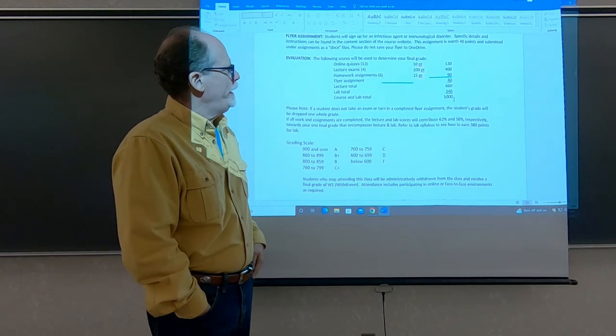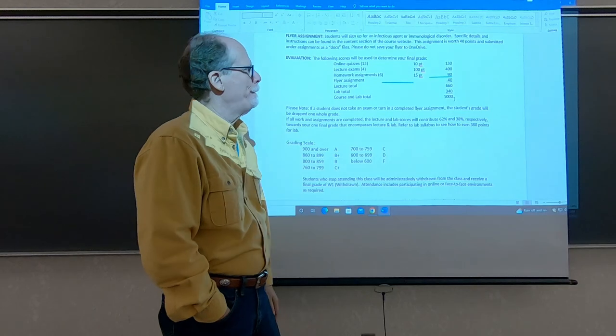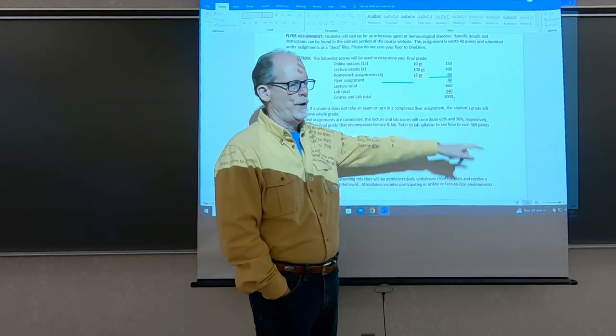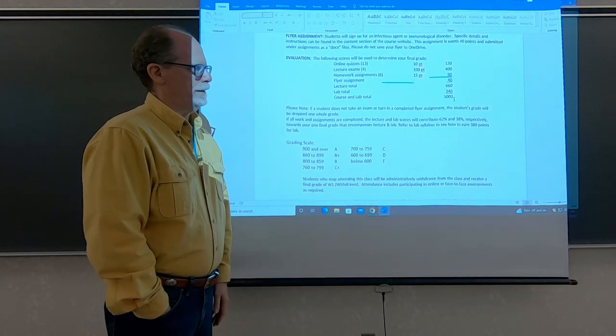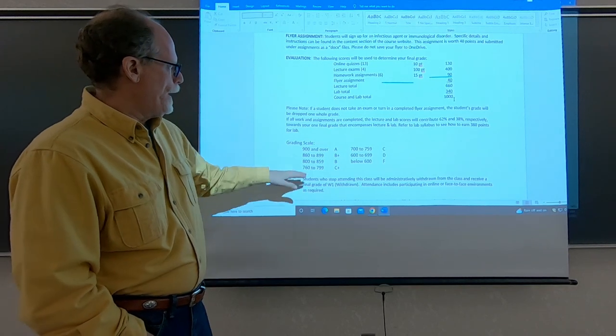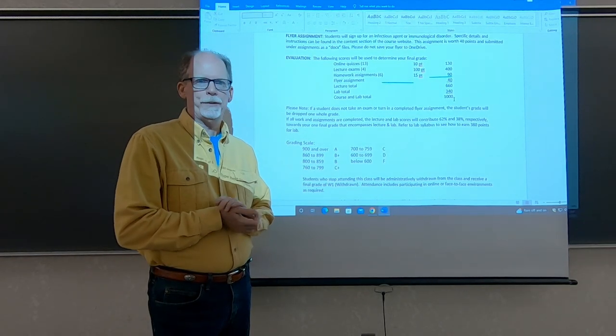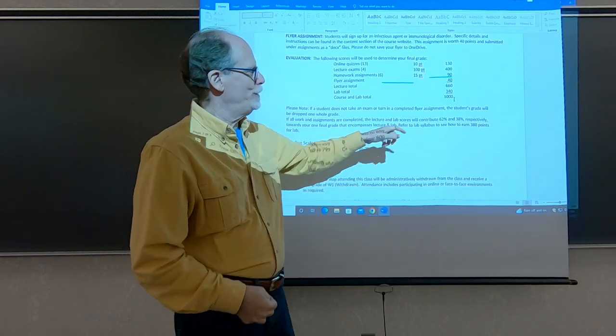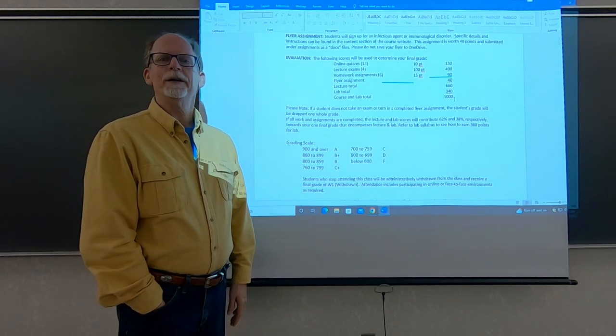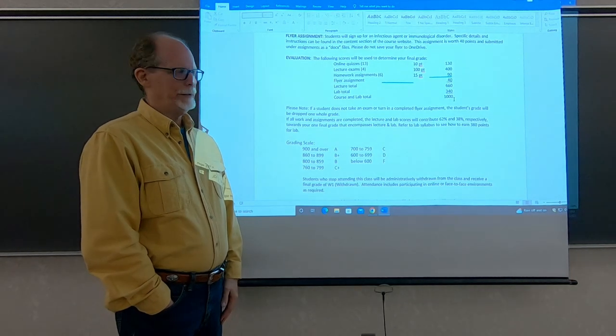This is the breakdown for your grade. You'll have 130 from quizzes, 400 points from exams, homework assignments come to 90 points altogether, 15 points apiece. The flyer assignment is 40, that comes to 660. Then in lab you can earn 340 points. I'll go over the lab syllabus when we have lab. If you have 900 points out of the thousand you earn an A, if you have 800 points you get a B.